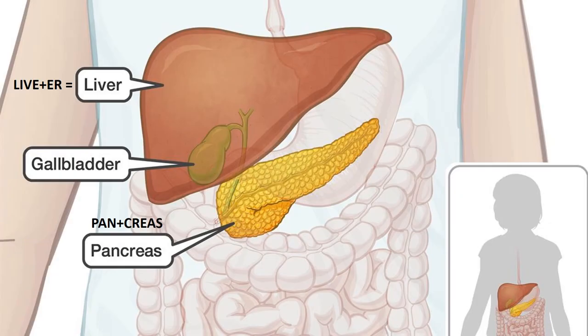The word pancreas comes from two Latin words: pan and creas. Pan means far, wide, all, overall — as in panoramic view or panoramic vision. And creas means to create. This Latin word creas comes from the Sanskrit word crea.